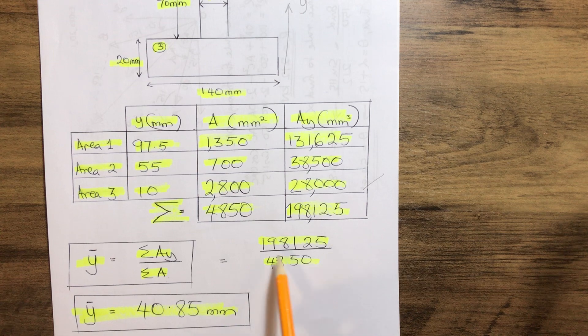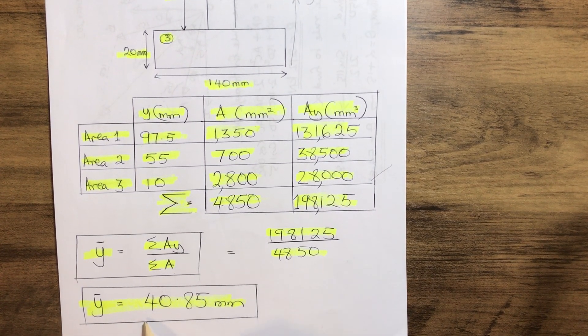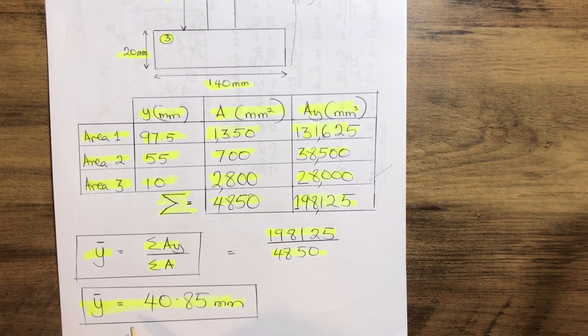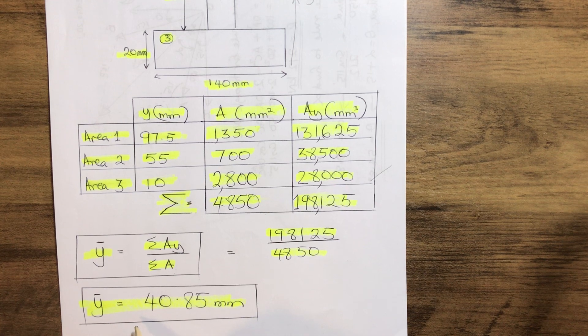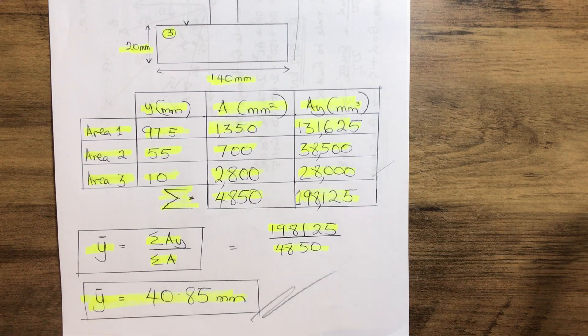So our Y-bar, which is a reference distance from the centroid vertically, gives us 40.85mm. Thank you.